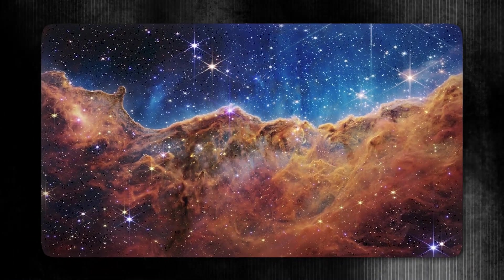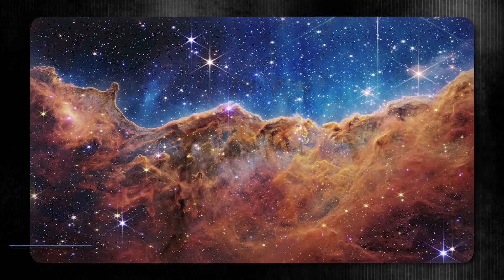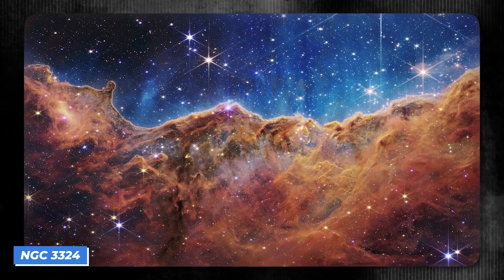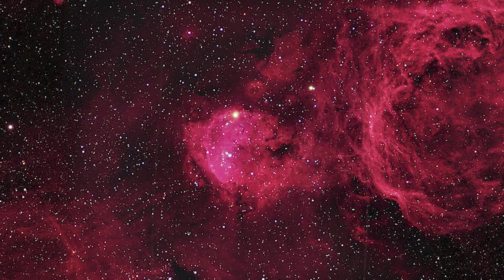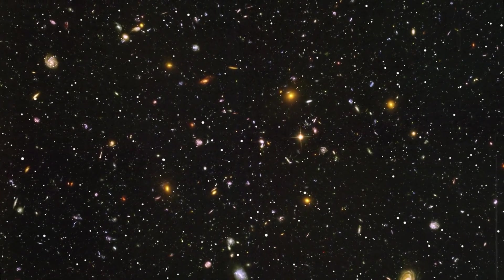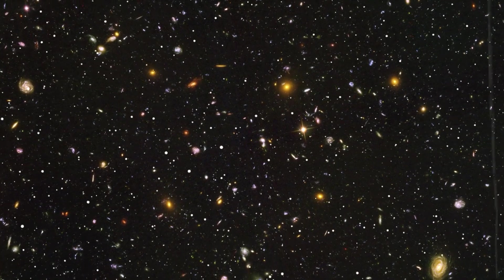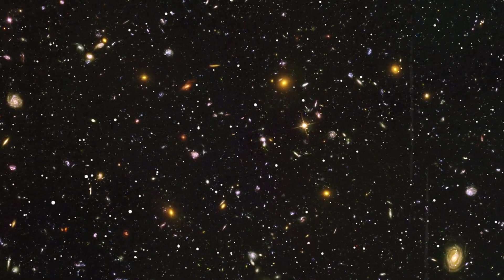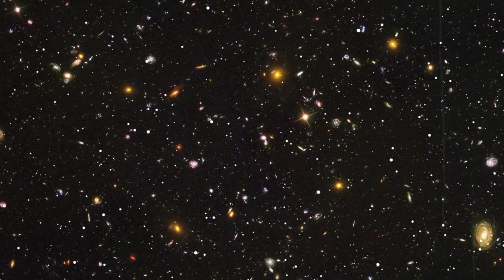Our first destination is the breathtaking Cosmic Cliffs, a region within the Carina Nebula known as NGC 3324, located approximately 7,600 light-years from Earth. These towering structures, standing around seven light-years tall, form part of a much larger nebula with a hollowed-out core. This cavity has been carved by powerful stellar winds from young stars, which have cleared the surrounding dust, creating the striking edge visible in this image.